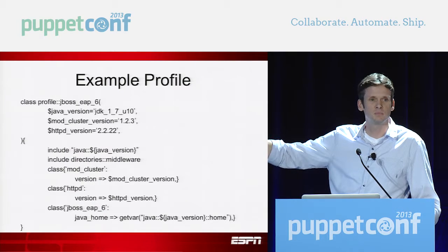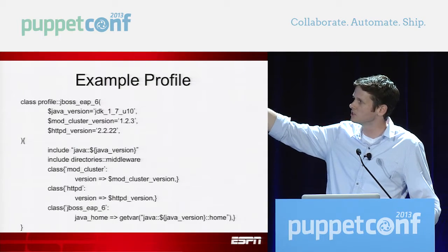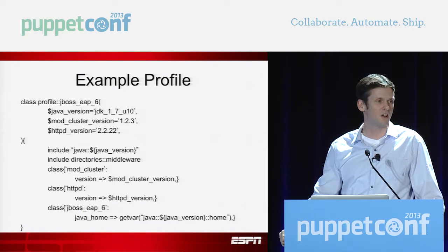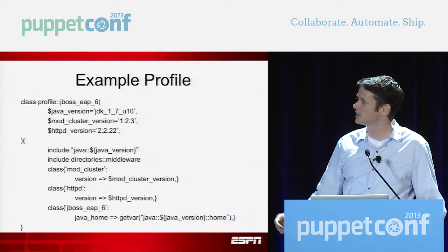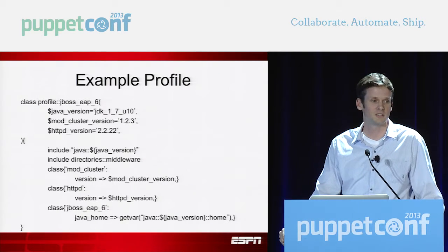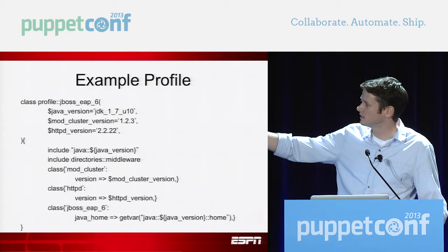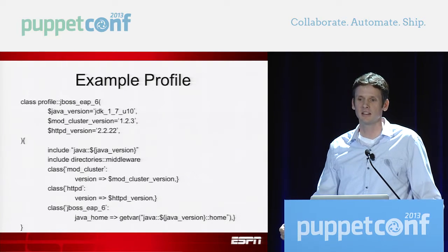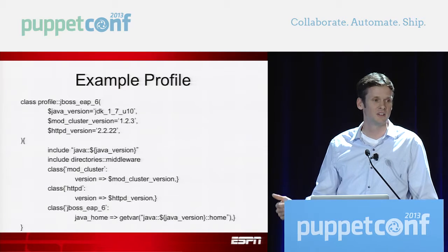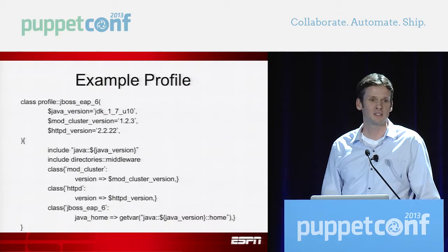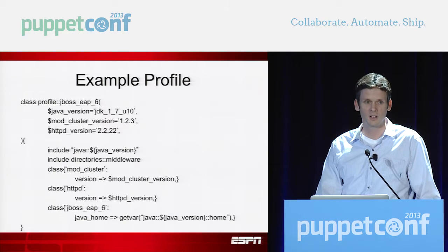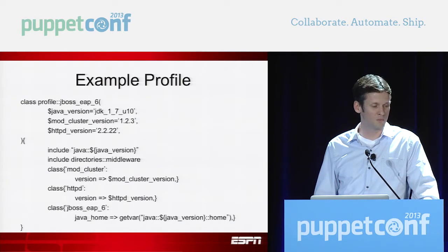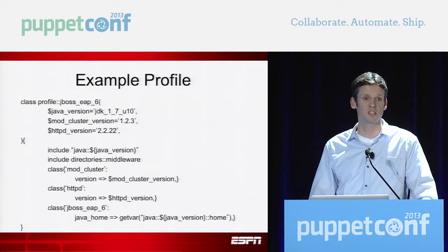Inside our profile, we use class parameters to prevent Hiera overrides. The parameters would be pulled off into the defaults file, and you'd just refer to them as profile::jboss_eap6::java_version, et cetera. But by defining those classes and setting them as parameters, that's going to override Hiera. So somebody can't come in later and set a value on a specific host to change our Java version to something that's not supported. That allows us to enforce it. I'm going to try to run through this — I've got 40 minutes and I want to open it up for questions at the end, because that's how we learn.